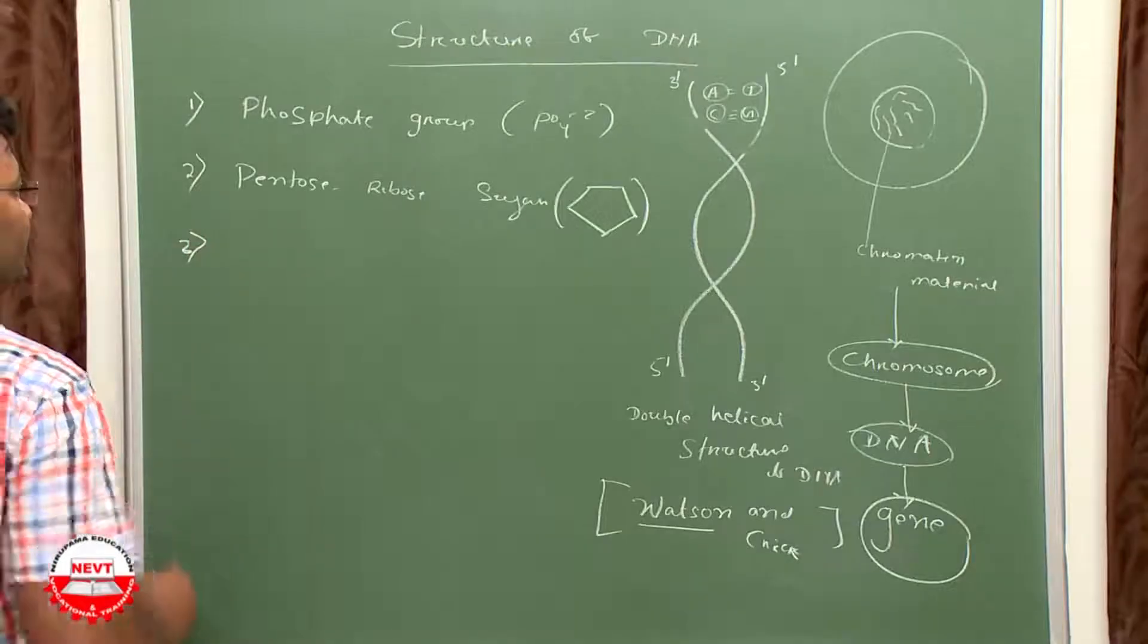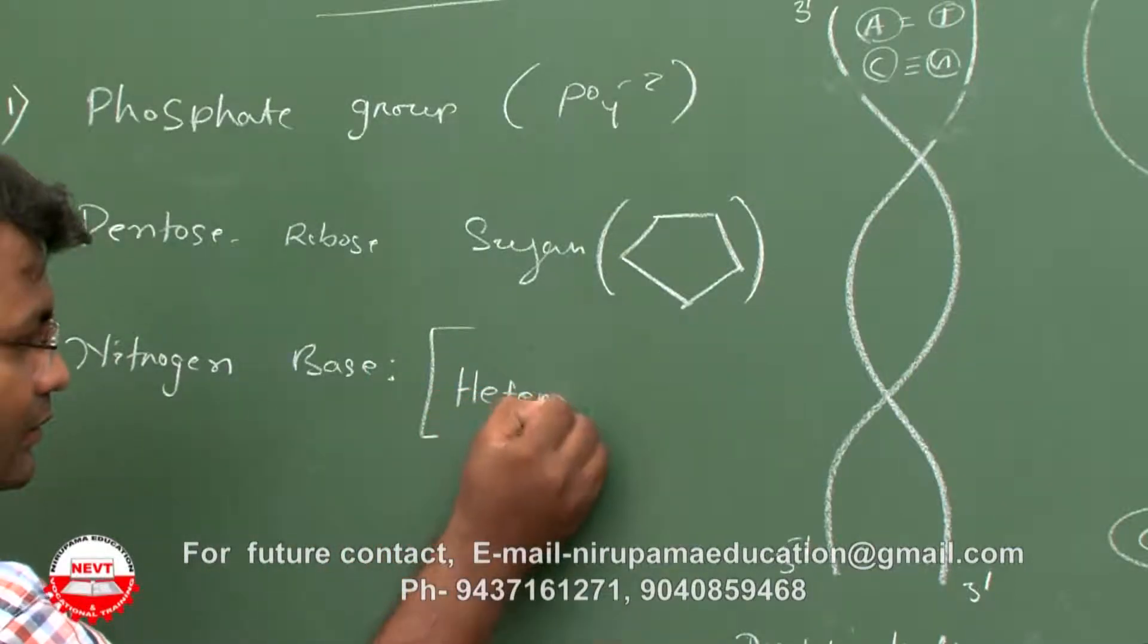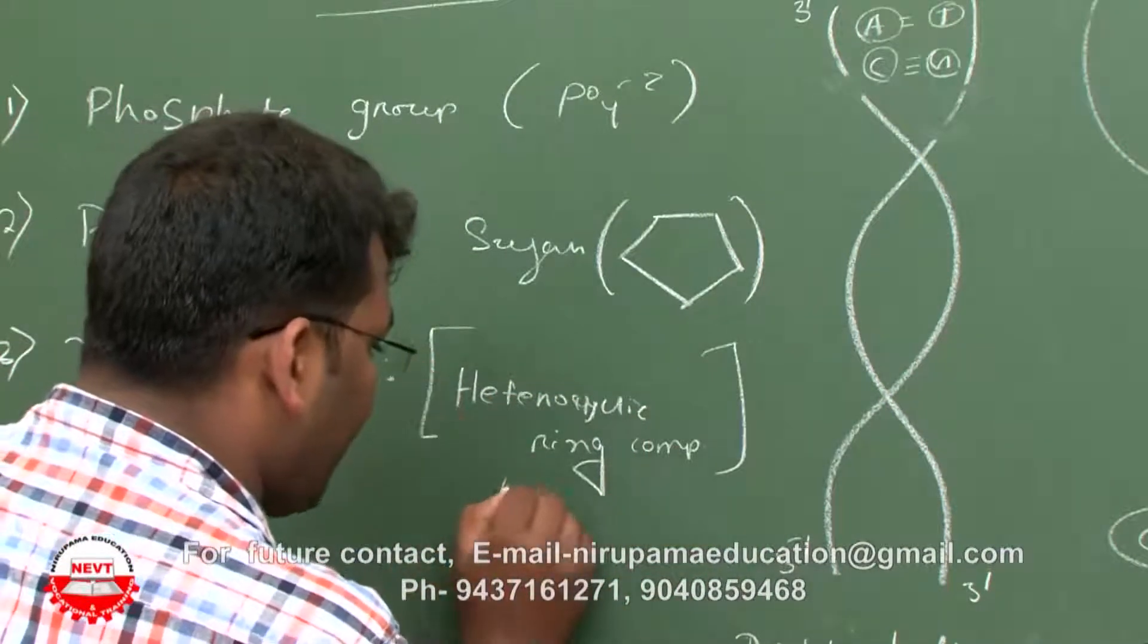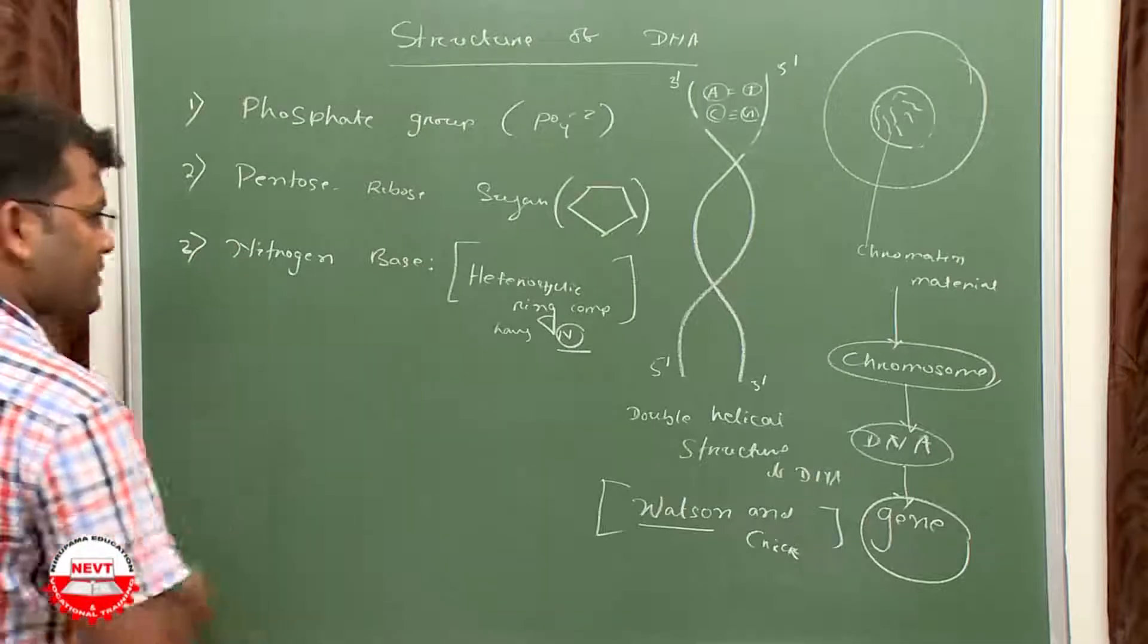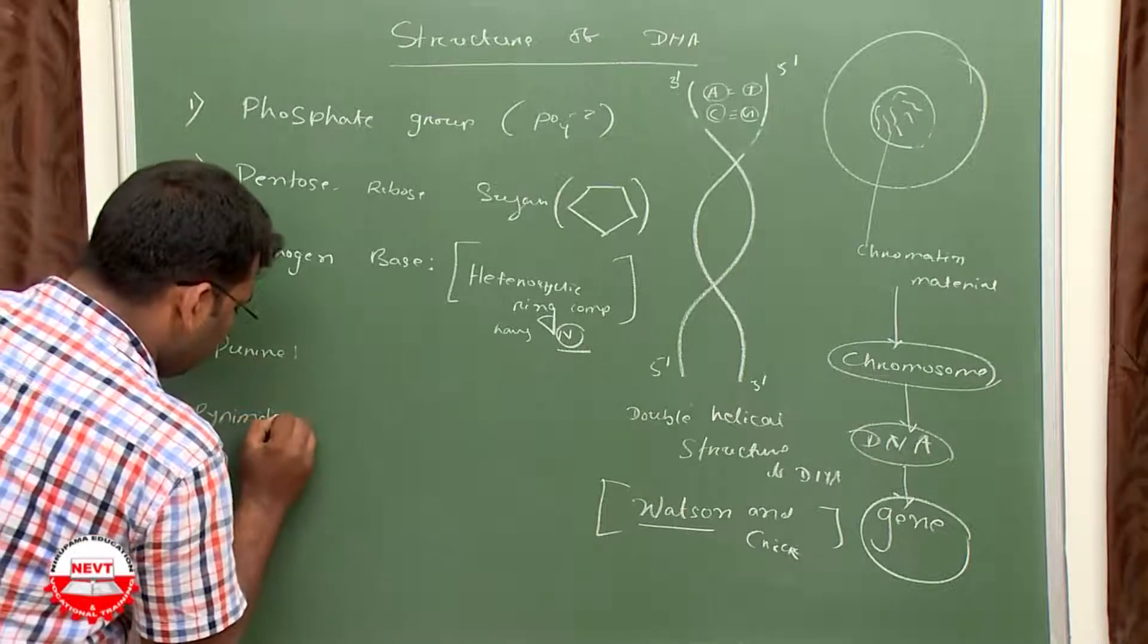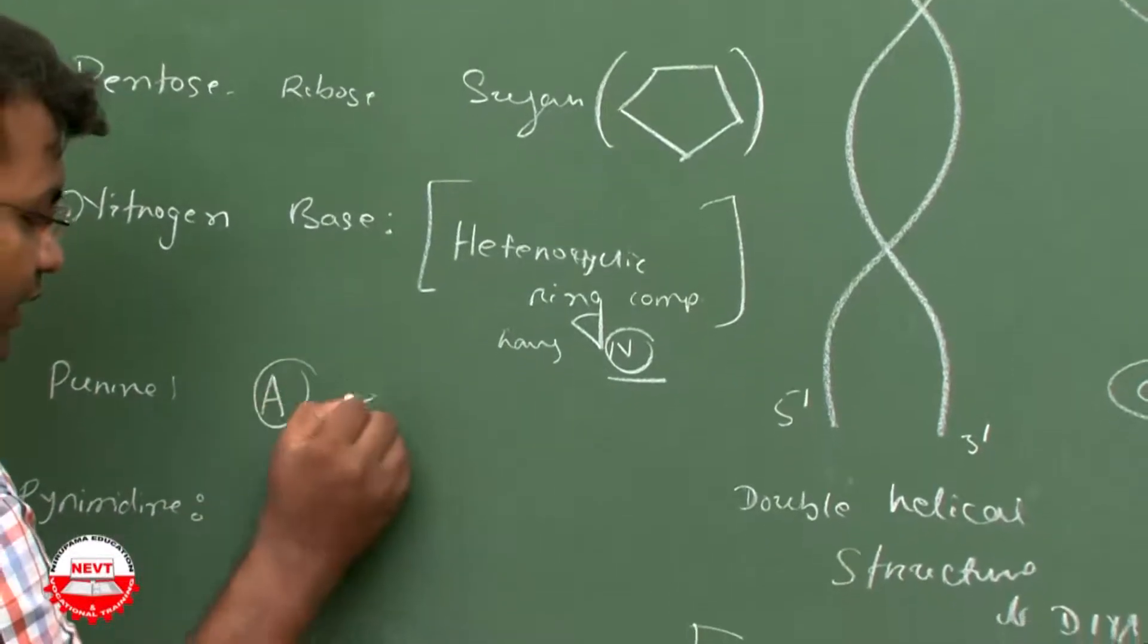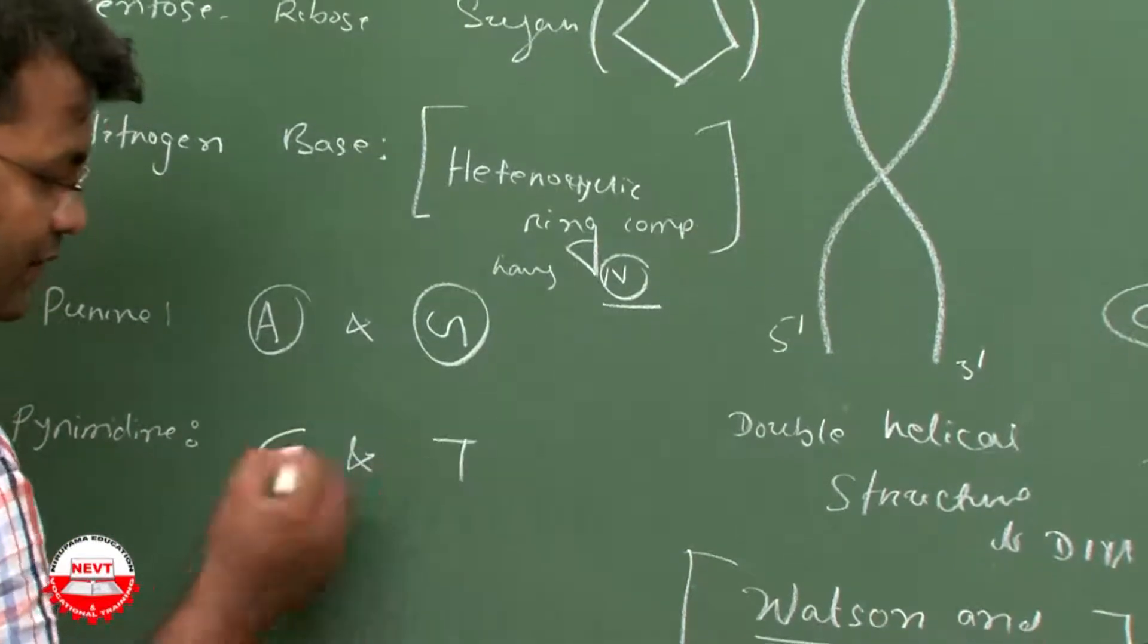Third is nitrogen base, which are heterocyclic ring compounds having nitrogen. Nitrogen bases are two types: one is purine base and another is pyrimidine base. Purine bases are adenine and guanine. Pyrimidine bases are cytosine and thymine.